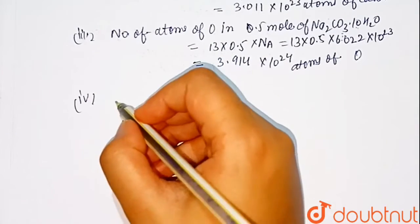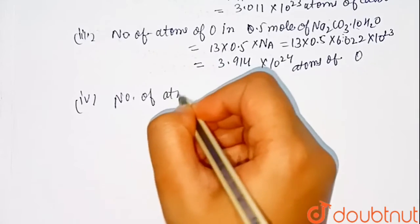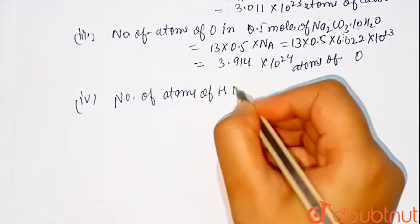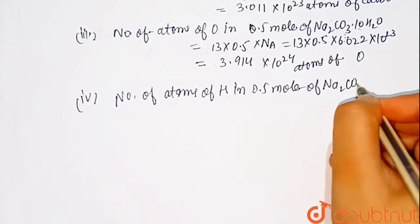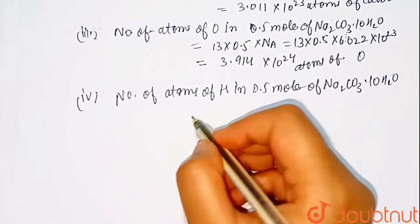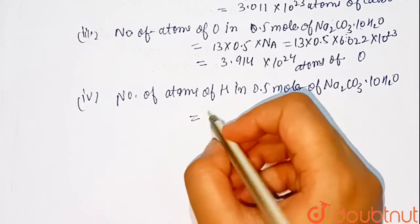Now fourth is hydrogen. Number of atoms of hydrogen in 0.5 mole of NA2CO3.10H2O. As we see that there are two hydrogen atoms present in this compound.